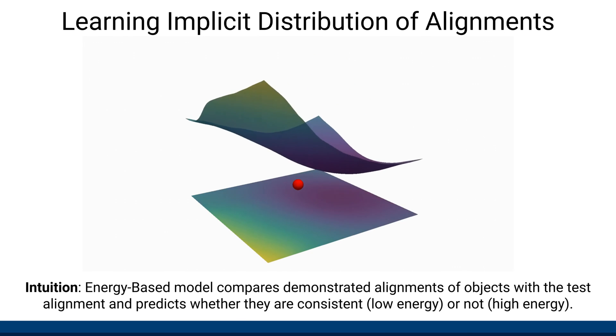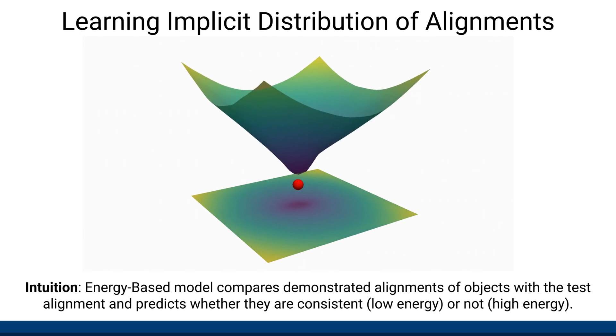Initially, the predicted energy values are random. However, through training, learned energy landscapes evolve and their minima end up representing the desired alignments between the objects.